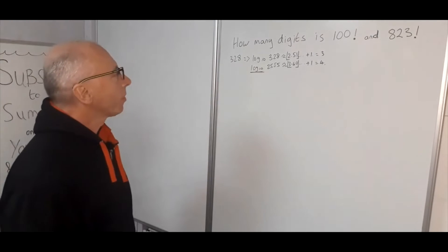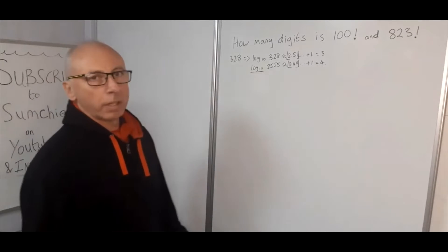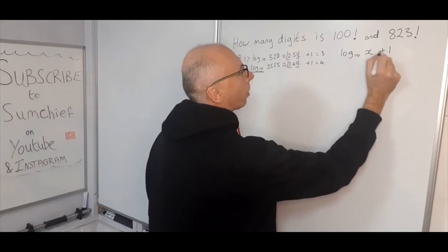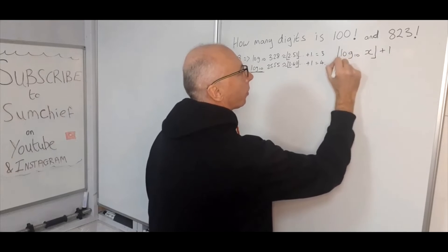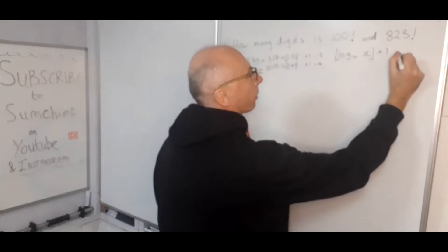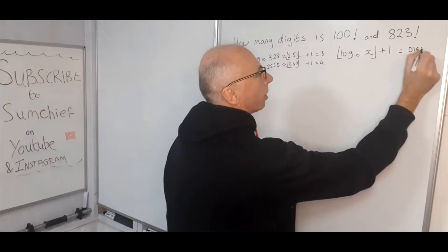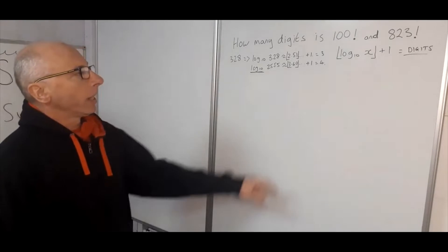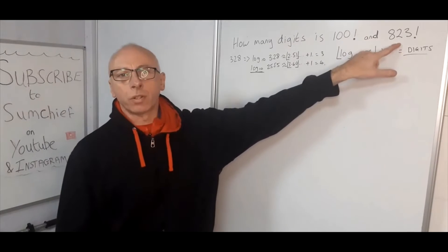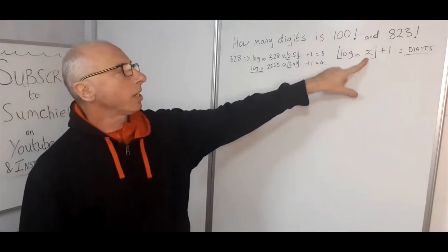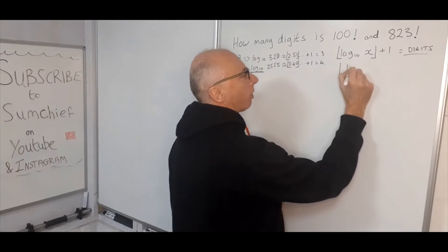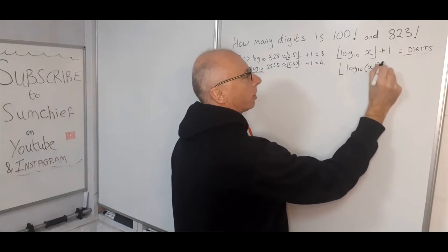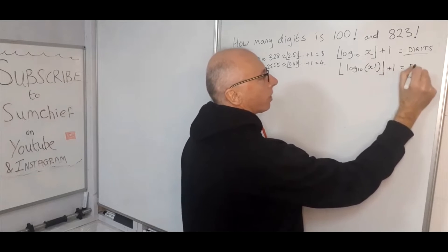So the formula is: floor(log base 10 of x) + 1 gives us the number of digits. Now for factorial numbers, we can extend this slightly: floor(log base 10 of x!) + 1 will give us the number of digits of the factorial number.